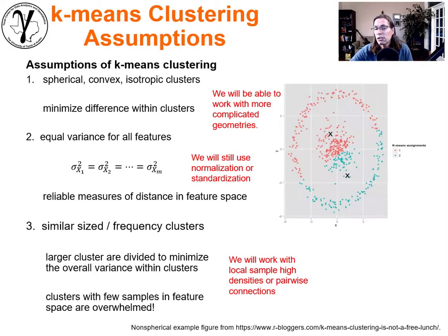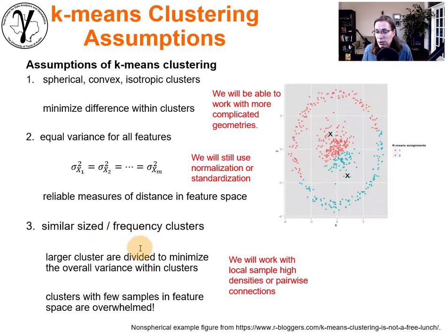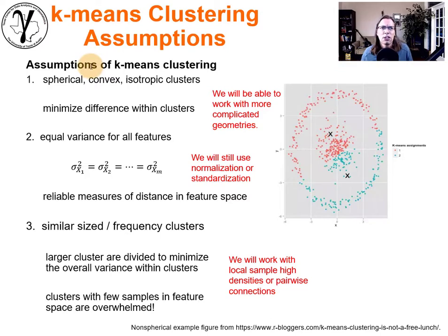Let's do a quick review of the limitations of K-means clustering. Spherical convex isotropic clusters means we minimize within-cluster difference but will be unable to work with complicated geometries. We also assume equal variances for all features, giving a reliable L2 norm dissimilarity measure, and similar size or frequency in each cluster. Looking at this data set from this blog site, we can see K-means produces poor groupings even though our eye can clearly identify distinct groups — because of the spherical convex isotropic assumption.